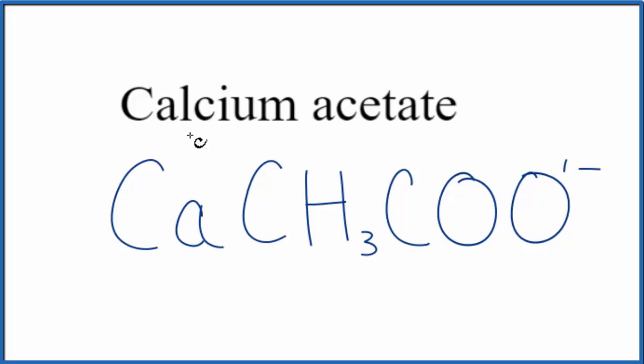So, we know the charge on the acetate, and since we have this calcium, which is a metal, the acetate, that's a group of non-metals, this is an ionic compound. We have to balance the charge, have a net charge of zero.